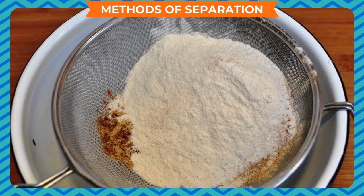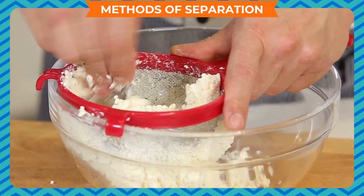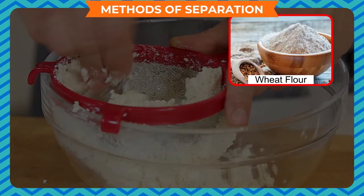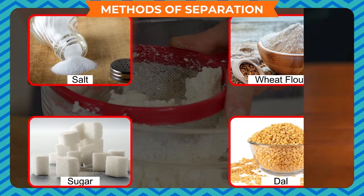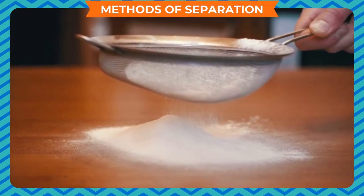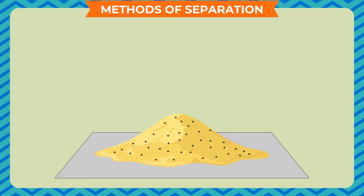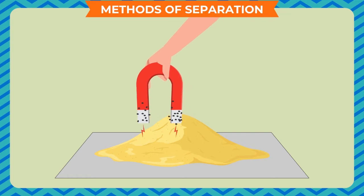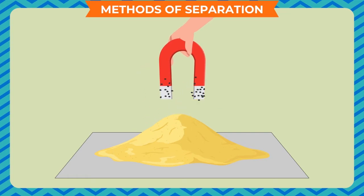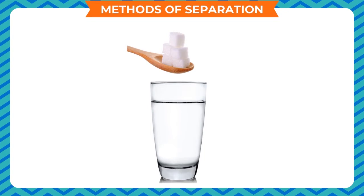Practical activity: you would have seen your mother sieving wheat flour before kneading in the kitchen. Make a mixture of wheat flour, salt, sugar, and dal at home and separate each component using different mesh-framed sieves. Notice whether all things can be separated by sieving or not. Also take a sample of sand from the garden, place it on paper, and move a magnet over it — you will see iron particles cling to the magnet, demonstrating magnetic separation.